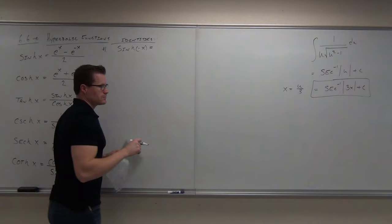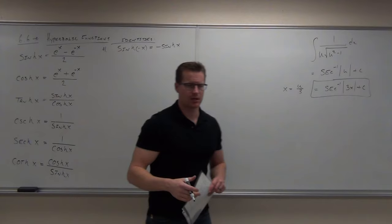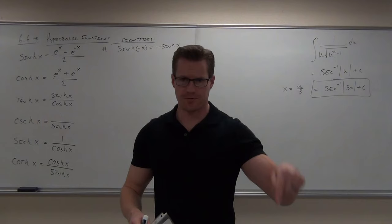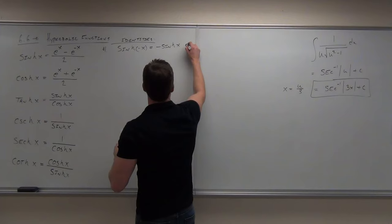Hyperbolic sine of negative x gives negative hyperbolic sine of x. This is saying that just like regular sine is an odd function — odd means symmetrical about the origin — hyperbolic sine is also an odd function.